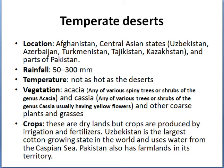The next region is temperate deserts, found in Afghanistan, Central Asian states like Uzbekistan, Azerbaijan, and Tajikistan, and some parts of Pakistan as well. The rainfall in these areas varies between 50 to 300 millimeters. Temperature is not as hot as deserts but quite warm. Vegetation consists of acacia and other drought-resistant scrub plants due to very little rainfall. Crops are produced by irrigation and fertilizers. Uzbekistan is the largest cotton-growing state in the world and uses water from the Aral Sea. Pakistan also has farmlands in its territory.